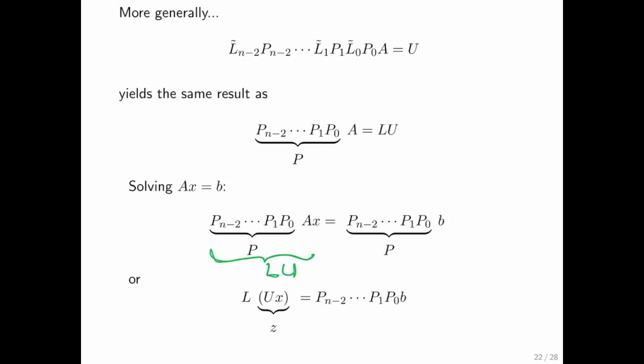And therefore, what you want to do is you want to take your right hand side matrix B, apply the same permutations to it upfront, and then do the same forward and backward substitution stages that we had created for LU factorization before.